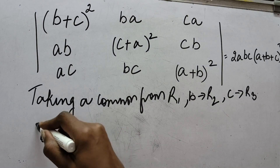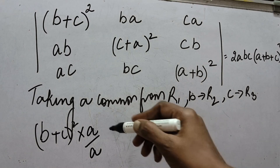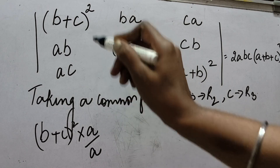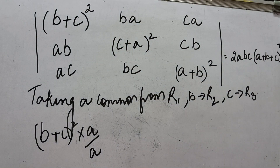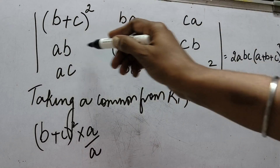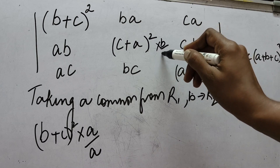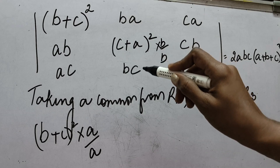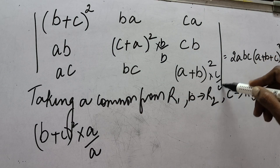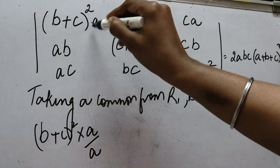Now if I look at the first row, a is common in two elements but not in the third — (b+c)². So I can multiply that element with a and divide with a; ultimately they will cancel. But for taking a common, I can get at least a there. Similarly, when I come to the second row, I want to take b common but b is not in every element, so I do the same trick. And in the third row, c is there in two elements but not in the third, so in my mind I will multiply that element with c and divide with c.